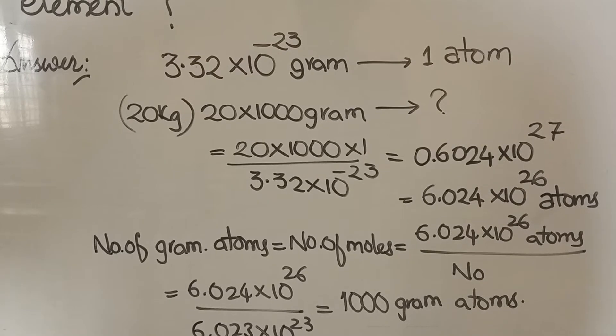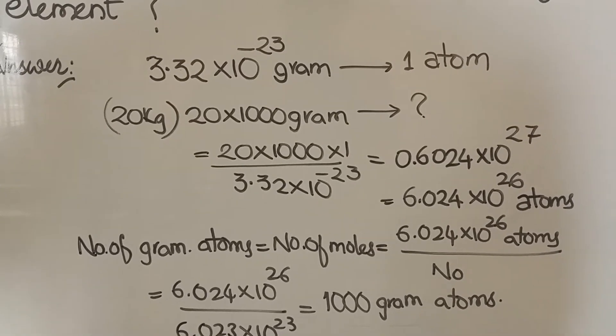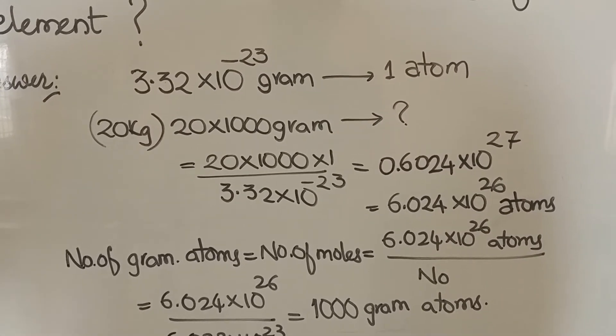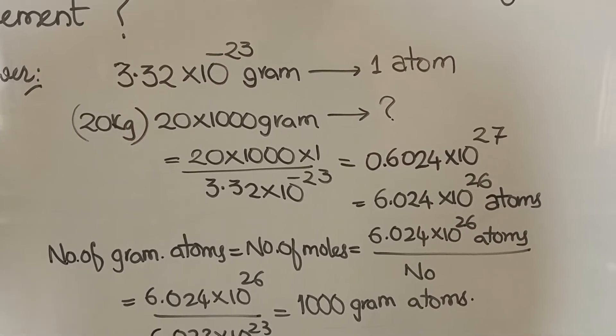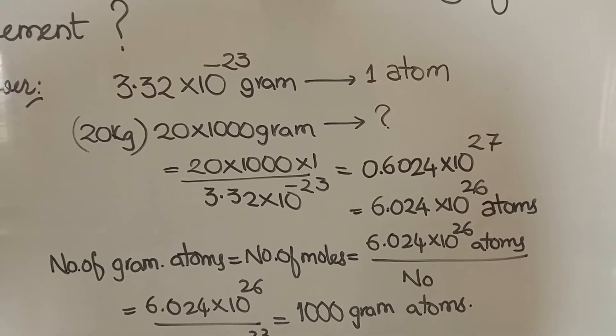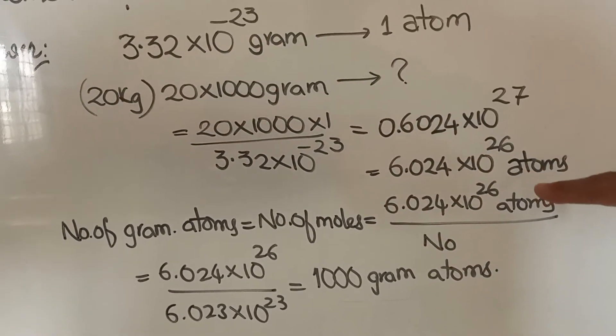20 kg, that means 20×1000 grams, will be having how many atoms? So if you calculate that one, 20×1000 by 3.32×10^-23, number of atoms you are getting is 6.024×10^26. You can see here 6.024×10^26.